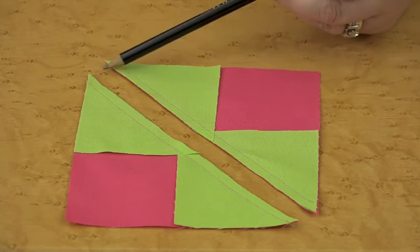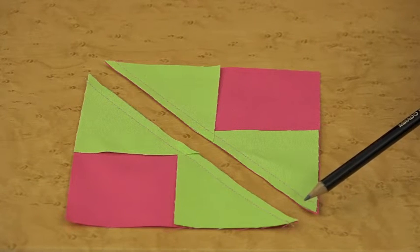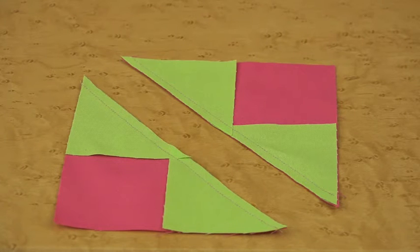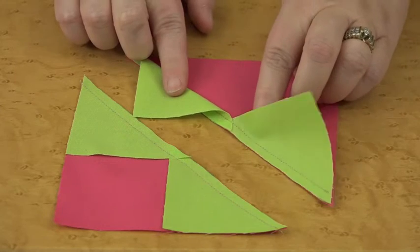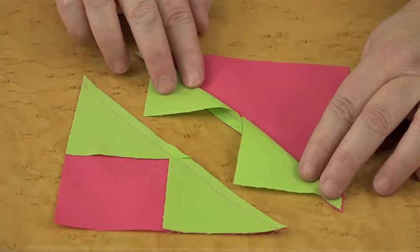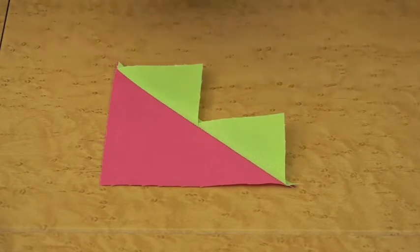Once you've done that, with your rotary cutter and acrylic ruler, go ahead and cut on that diagonal line and you'll have these two pieces. Then we're going to go to the pressing board and open up these pieces and press them. We'll be right back to sew the next unit.